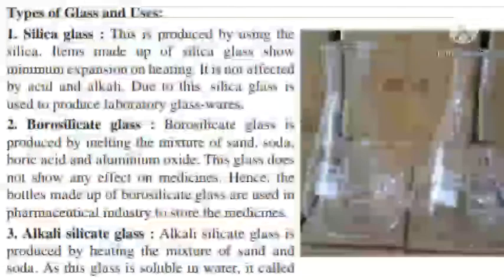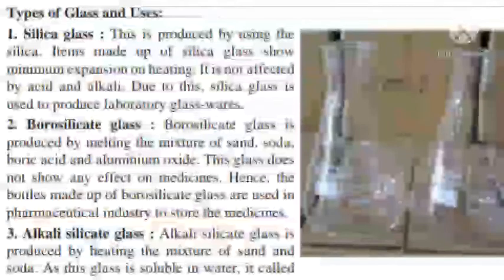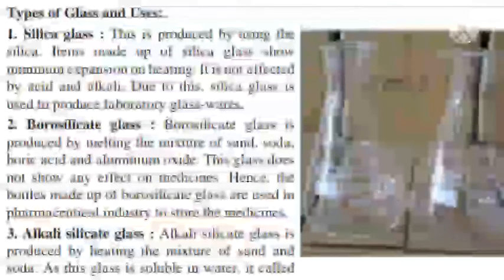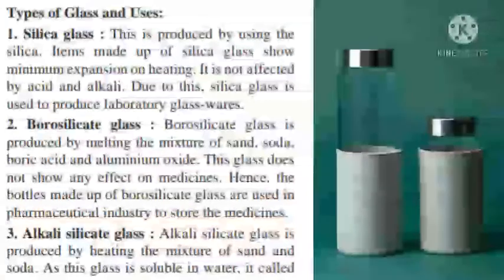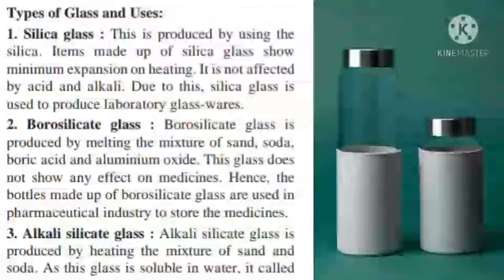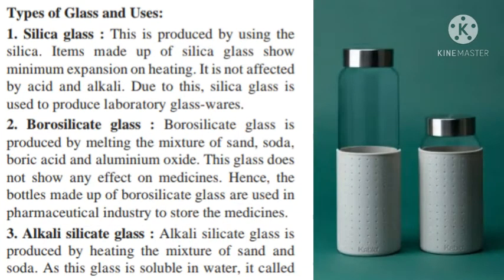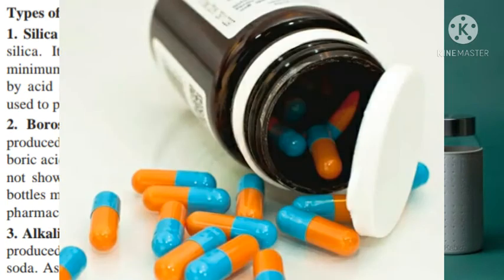Types of Glass and Uses. First: Silica Glass. This is produced by using silica. Items made of silica glass show minimum expansion on heating and are not affected by acid or alkali. Due to this, silica glass is used to produce laboratory glassware. Second: Borosilicate Glass. Borosilicate glass is produced by melting a mixture of sand, soda, boric acid, and aluminum oxide. This glass does not affect medicines, so bottles made of borosilicate glass are used in the pharmaceutical industry to store medicines.